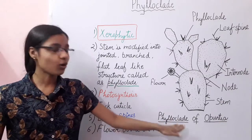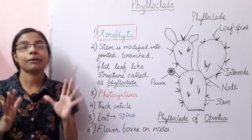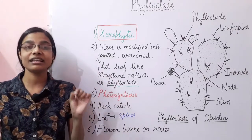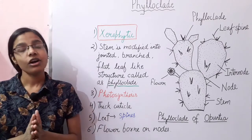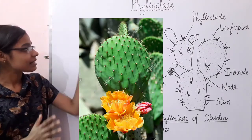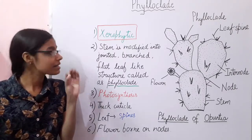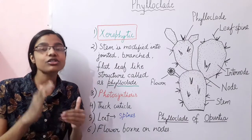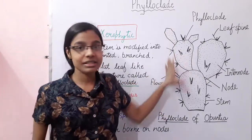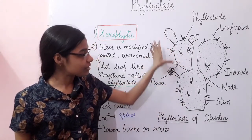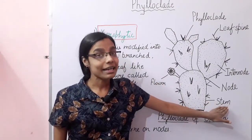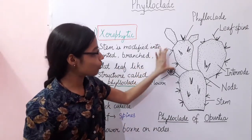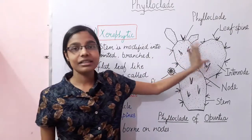The first example is the phylloclade of Opuntia. Opuntia is basically a xerophytic plant, meaning it grows in xeric habitats that contain very little or negligible water. In Opuntia, the stem gets modified into a jointed, branched, flat, leaf-like structure called the phylloclade. All these visible segments are the phylloclades in this case.